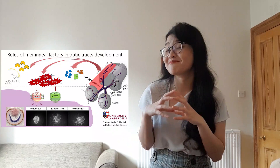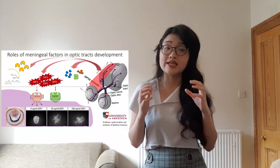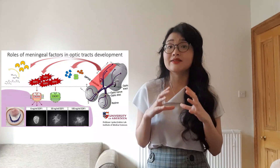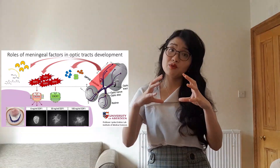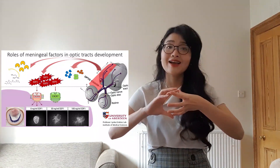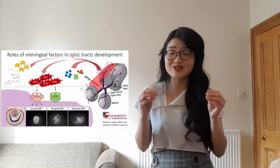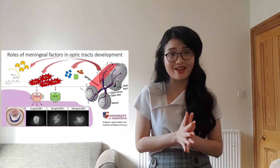The brain has a special protective layer called the meninges, shown in red color here. In the early period, the meninges act as a physical anchor to hold up the structure when a lot of things were moving inside the brain. It also releases a lot of factors into the brain to help in the process of brain development.